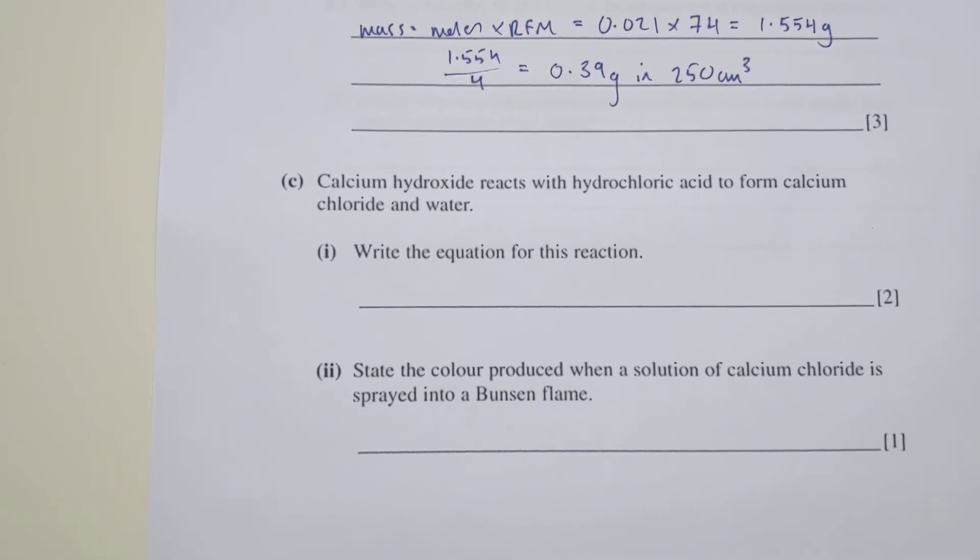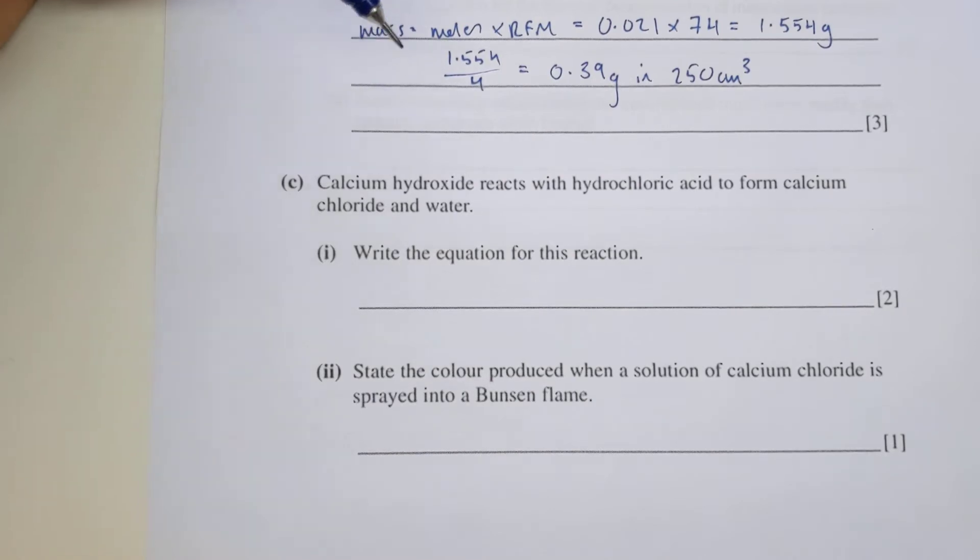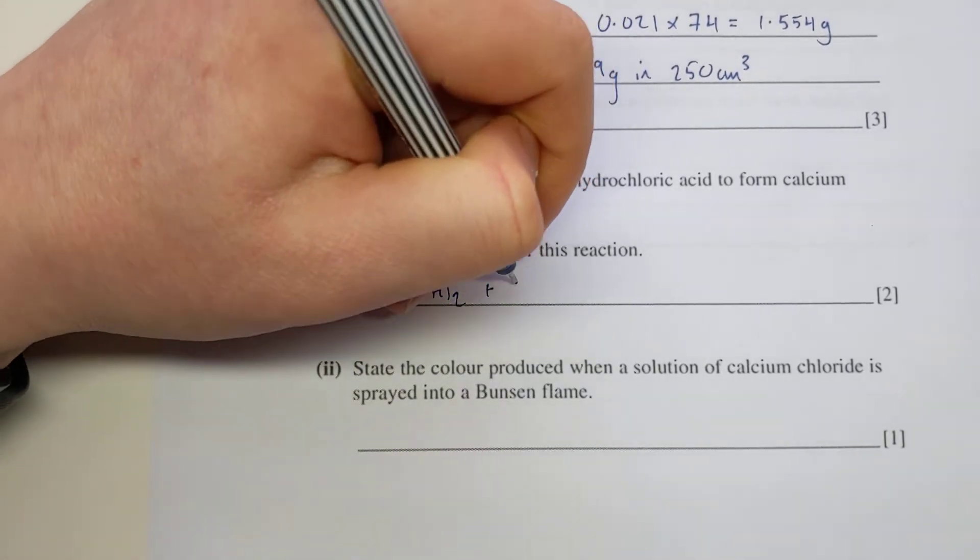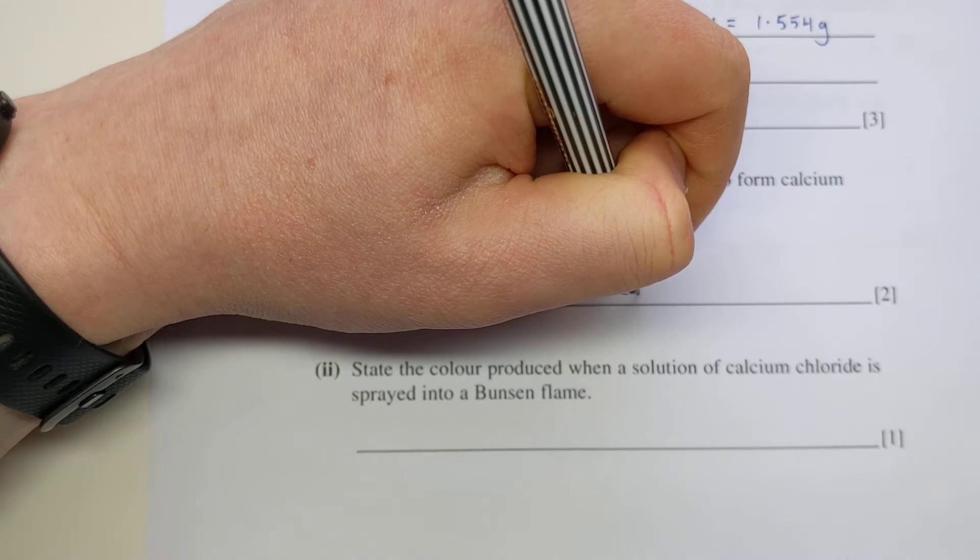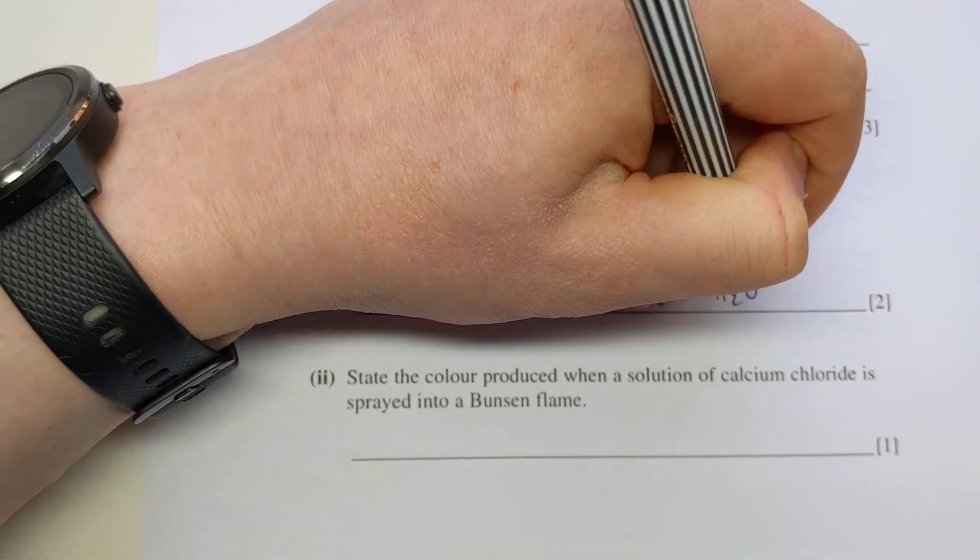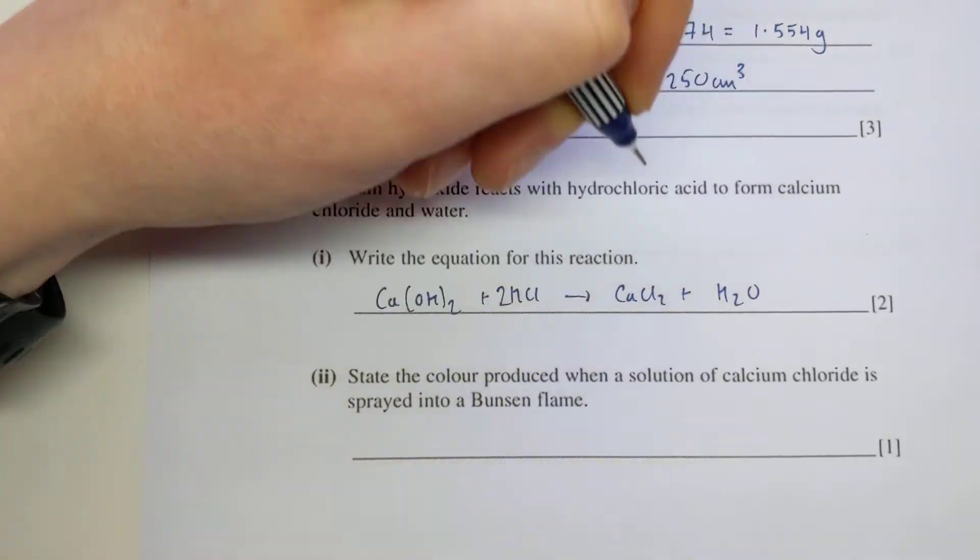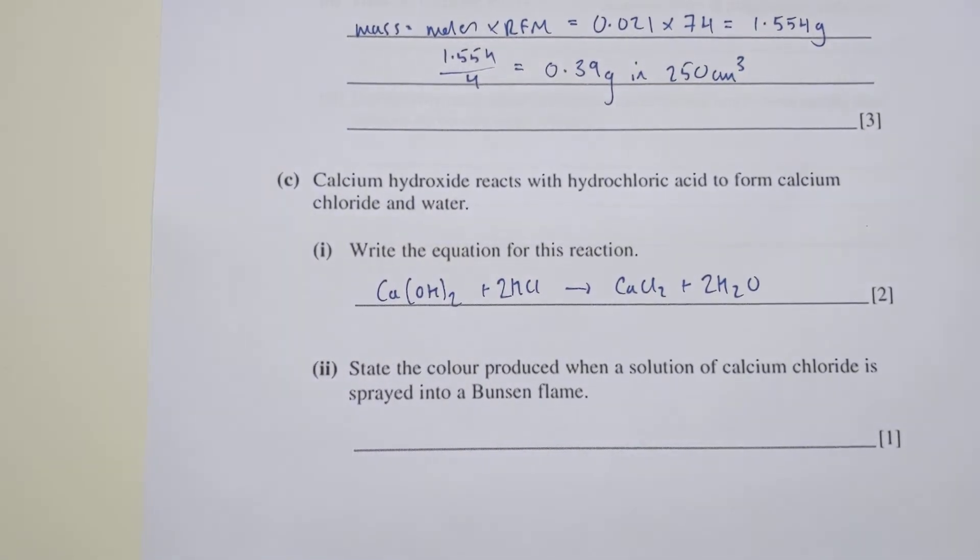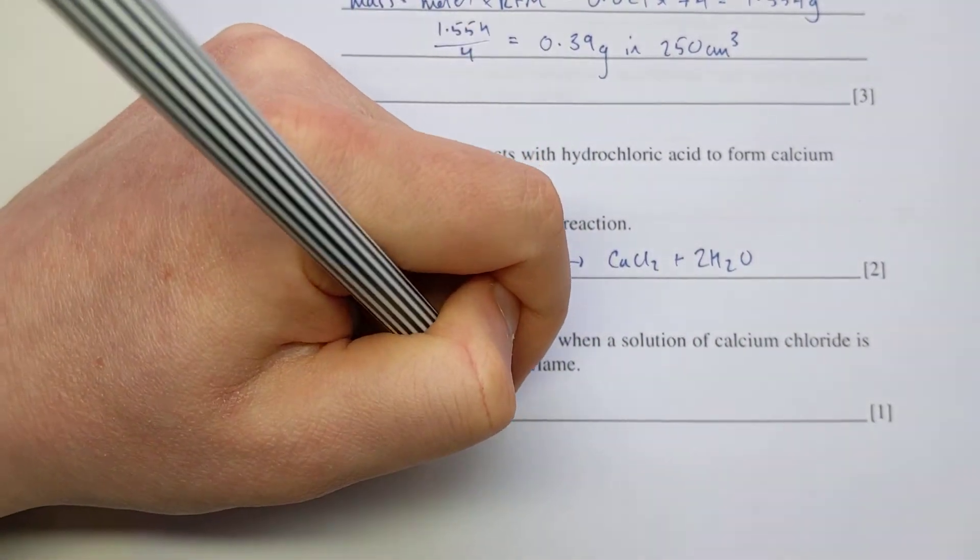Another couple of bits checking your equations: calcium hydroxide reacts with hydrochloric acid to form calcium chloride and water. Write the equation for this reaction. This one may not have been strictly in your notes but it's giving you plenty of information. Calcium hydroxide Ca(OH)2 reacts with hydrochloric acid HCl to make calcium chloride CaCl2 plus water H2O. Balancing it just requires two HCls to match the two Cls and two H2Os to match the hydrogens. The color produced when a solution of calcium chloride is sprayed in a Bunsen flame - checking your flame colors, calcium gives you a brick red flame color.